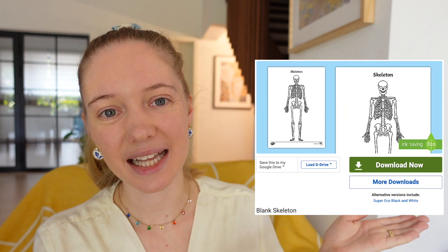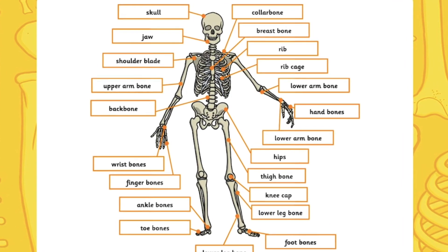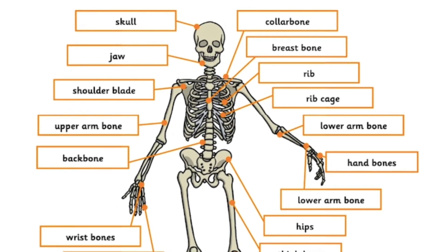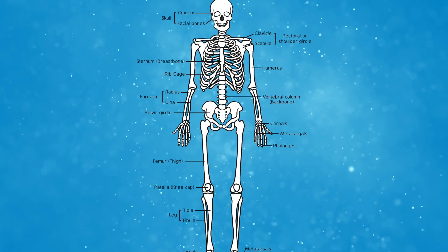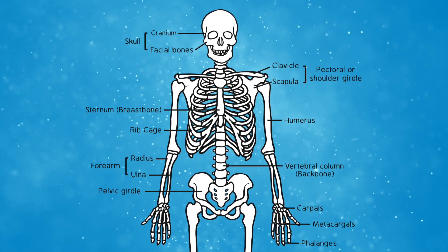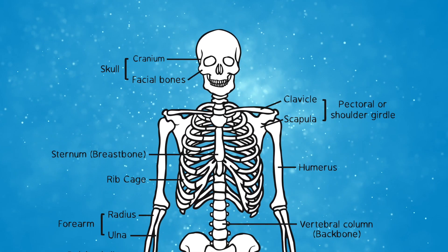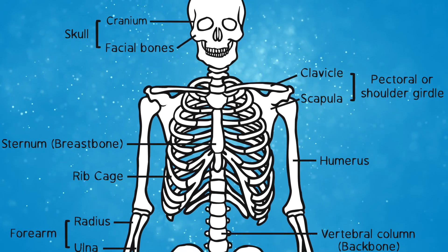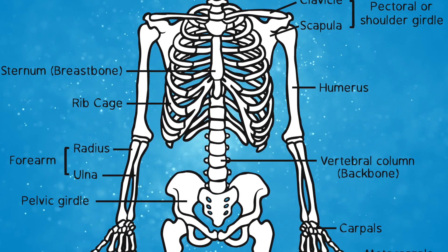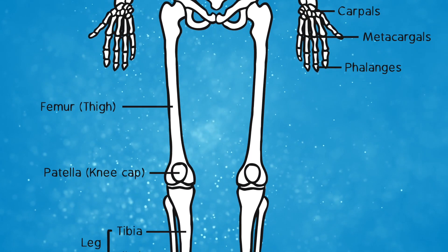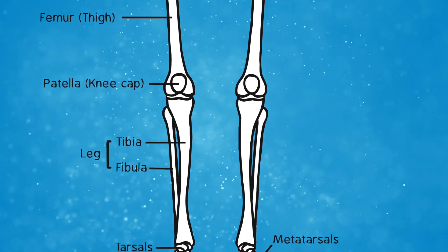Finally, put students' knowledge into practice with this blank skeleton resource. Encourage your class to label the different parts themselves. This activity would be great to use as a pre and post assessment at the beginning and end of a unit to see what children have learnt, or children could keep it with them throughout their learning, adding labels as they go. It would also be a great worksheet to accompany children in a research lesson in which they might use science books or go on a scavenger hunt for information on the names of the parts of the human skeleton.